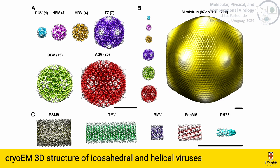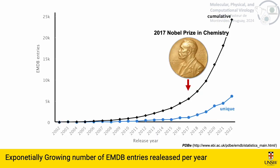This single particle analysis approach has been used to determine the structure of a number of icosahedral viruses. Here you have a gallery of viruses of different sizes, from the porcine circovirus — one of the smallest icosahedral viruses described — to the giant mimivirus. In all cases, the scale bar corresponds to 15 nanometers. During the past years, cryo-EM has undergone a revolution reflected in an exponential growth of the use of this technique in structural biology. Actually, in 2017, the Nobel Prize was awarded for this technique.